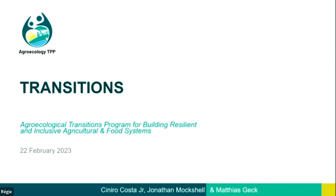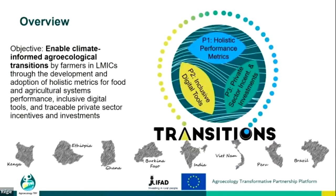The overall objective is to enable climate-informed agroecological transitions by farmers in low- and middle-income countries. It does so by tackling some of the key barriers to agroecological transitions that have been identified, and it works through three interrelated projects. Project 1, P1, focuses on holistic performance metrics — we'll get to the details in a second — and it very much aligns with your question, Philippe.